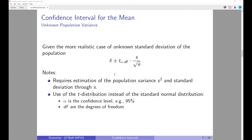Now let's move to the much more realistic case where the standard deviation of the population is actually unknown. In that case, we have to estimate it by using s, where we are dividing by n minus 1. This matters if the sample size is small, but doesn't matter as much if the sample size is very large.